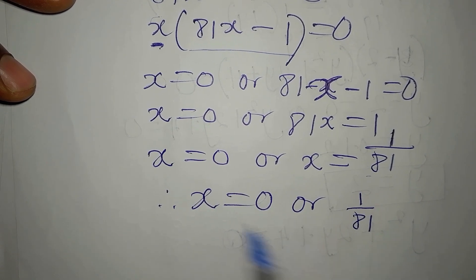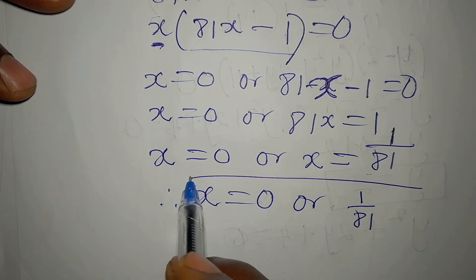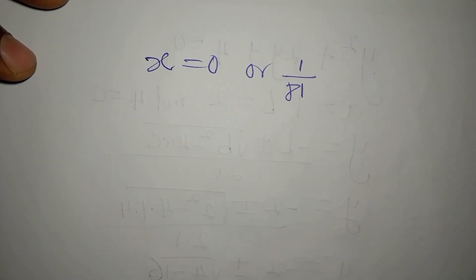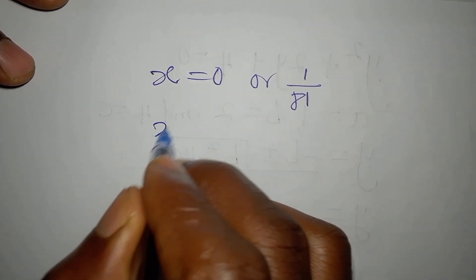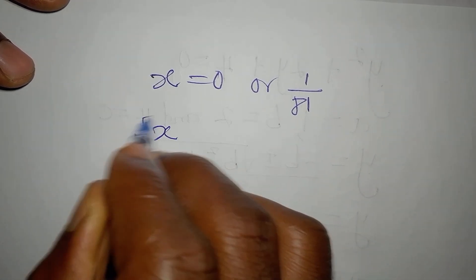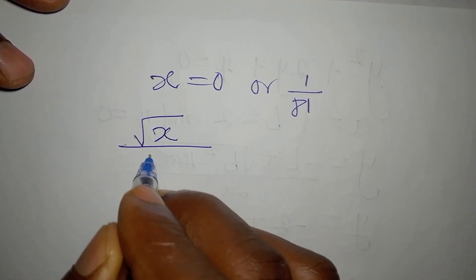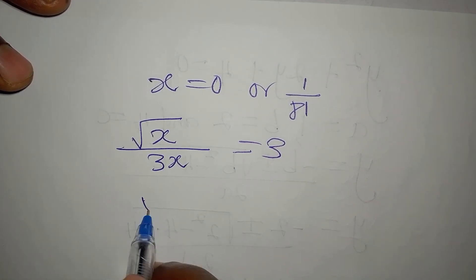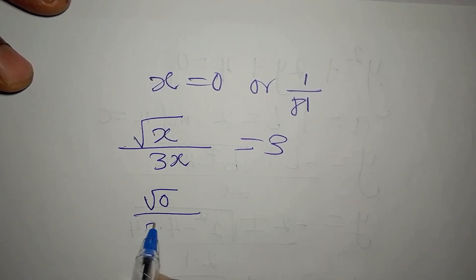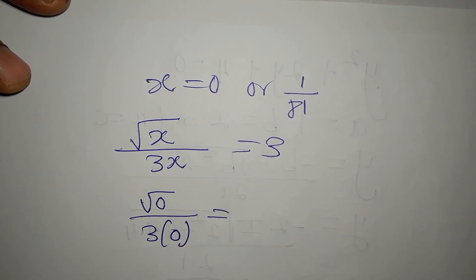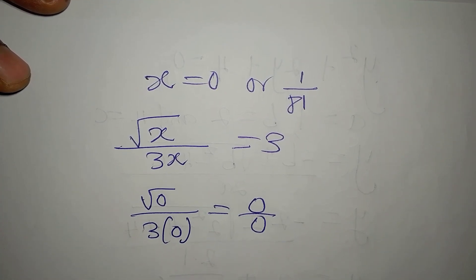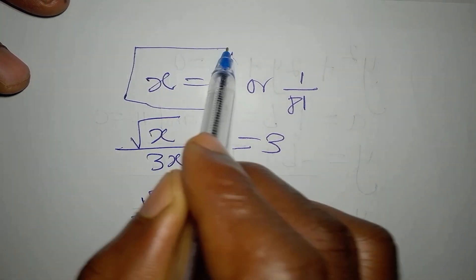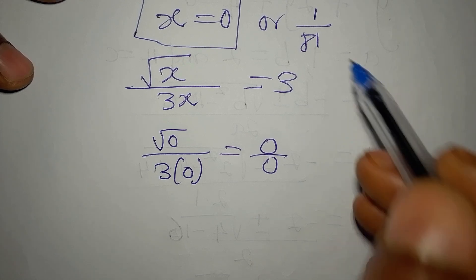Now let's verify both solutions. The equation is root x over 3x equals 3. If we substitute x equals zero, we get root zero over three times zero, which gives zero over zero. This is undefined and cannot equal 3, so x equals zero is rejected.